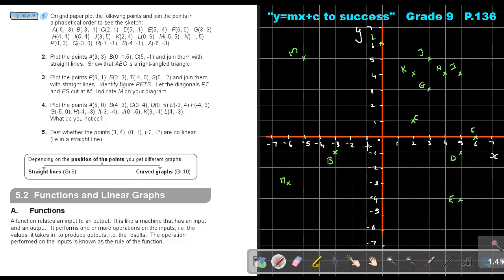Number N is going to be negative 1 and 5. Number P is going to be 0 and 3. Number Q is going to be negative 3 and 0. Number R is going to be negative 7 and negative 1. Number S is going to be negative 4 and negative 1. And number A is going to be negative 6.